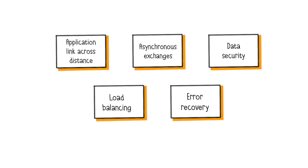It also allows asynchronous exchanges. You send a friend a WhatsApp message while they are offline — they'll still receive the message later, when they reconnect. Middleware works the same way, making sure data is delivered when the other application is ready.